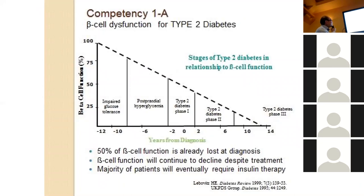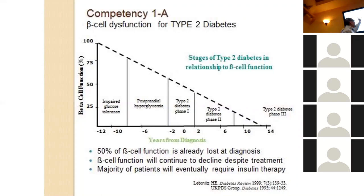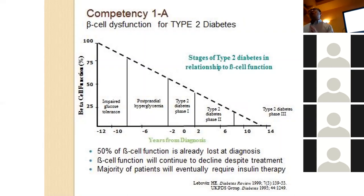This graph of beta cell function shows that even 10 to 12 years before diagnosis, people start to get impaired glucose tolerance and post-prandial hyperglycemia. At diagnosis, 50% of beta cell function is typically lost, and it continues to decline. At about 10 to 20% of beta cell function remaining, you probably need insulin at that point.